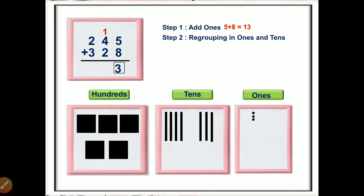Now it is time for addition of the tens place. The numbers in the tens position are 4, 2, and the carry-forwarded 1. Four plus two plus one equals seven. There are seven sticks — seven is only one digit, so we directly write 7 in the tens place. There is no carry forwarded to the hundreds place.